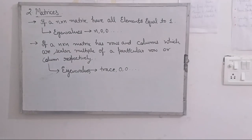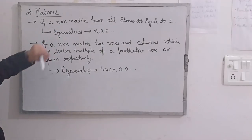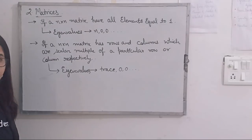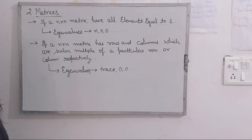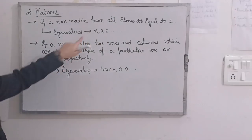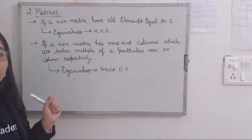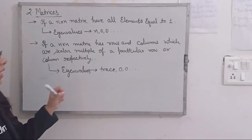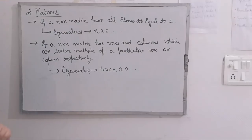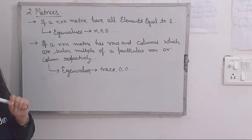Next rule: if you have an n×n order matrix in which all elements are equal to 1, then the eigenvalues in that case are n, 0, 0, and so on. That means if it is a 3×3 matrix, the value of n is 3, so eigenvalues will be 3, 0, 0, 0 — meaning there is only one non-zero eigenvalue, equal to the order of the matrix, and all others are zero.